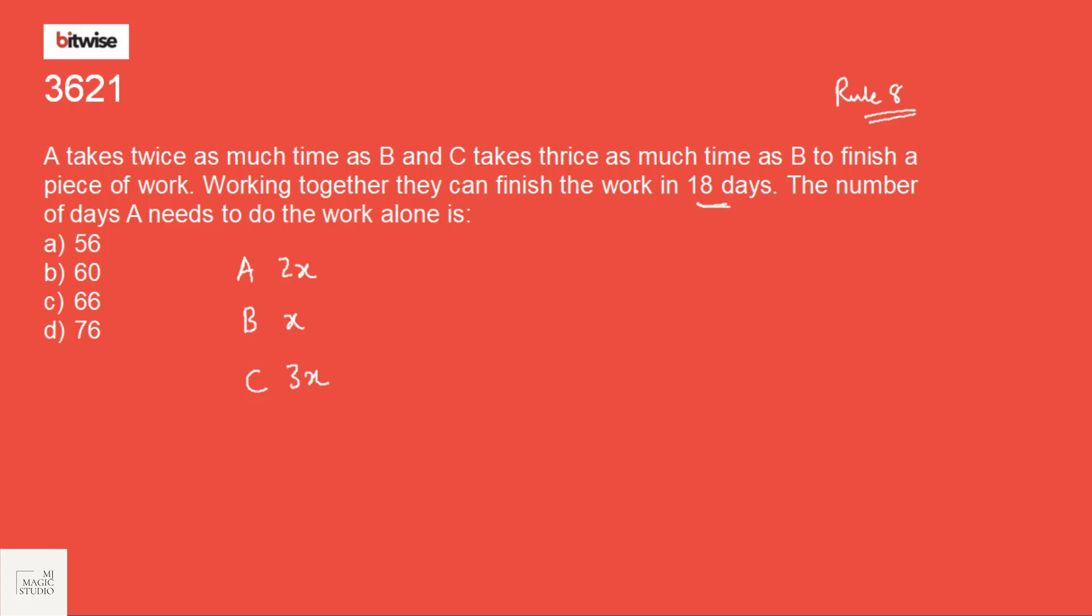Working together, they can finish the work in 18 days. Now if we use rule 8, the CM rule, what we first need to find is common multiple of 2, 1 and 3, that is 6. Now 6X by 2X is 3. 6X by X is 6. And 6X by 3X is 2.